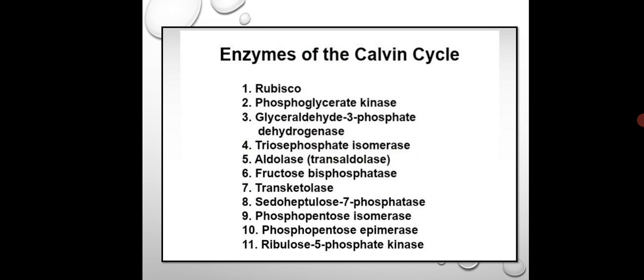What are the enzymes involved in the Calvin cycle? When we studied the pathway, we saw only one enzyme — Rubisco. Rubisco is involved for the fixation of carbon from the atmosphere and to provide it to the RUBP. Then there is phosphoglycerate kinase — since kinase is present, there is phosphate addition here.